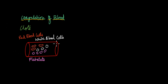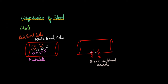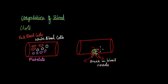Suppose this is the blood vessel and this is where the injury is caused. Blood starts to pour out through this injury site. This is not good for the body because we cannot lose too much blood. So it is the body's duty to block this injury site with something so that blood flow can be stopped.